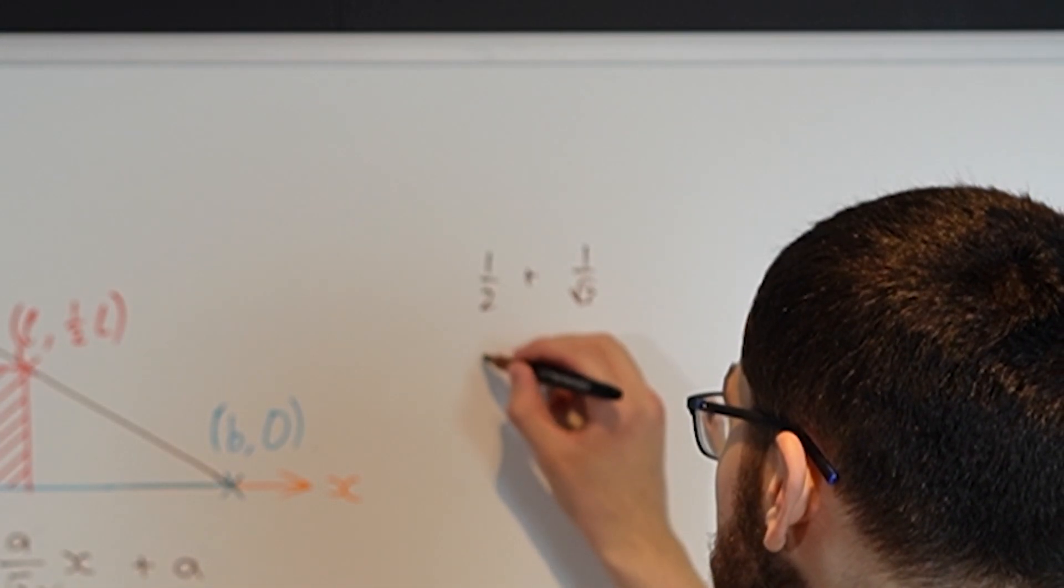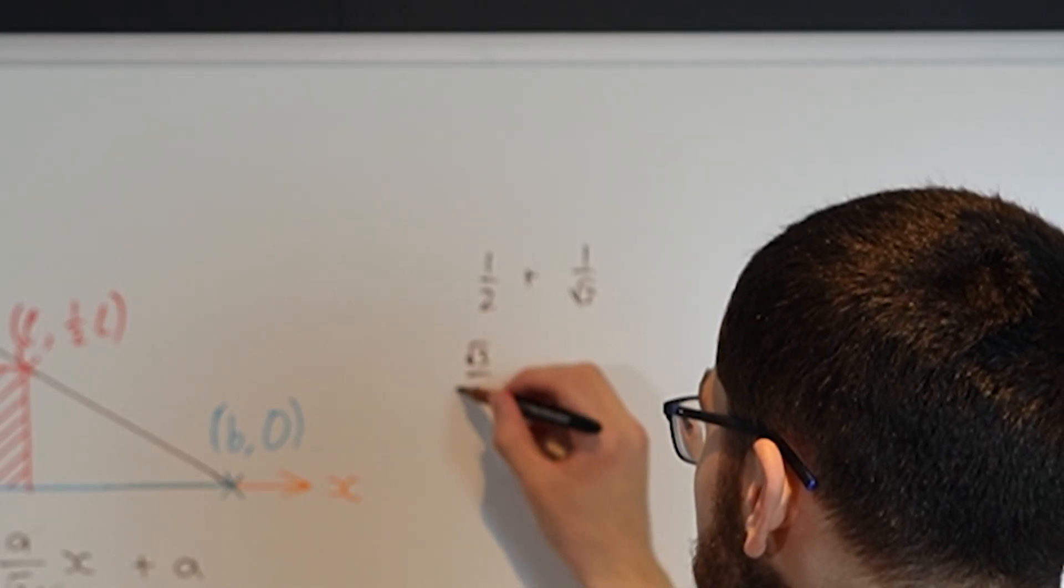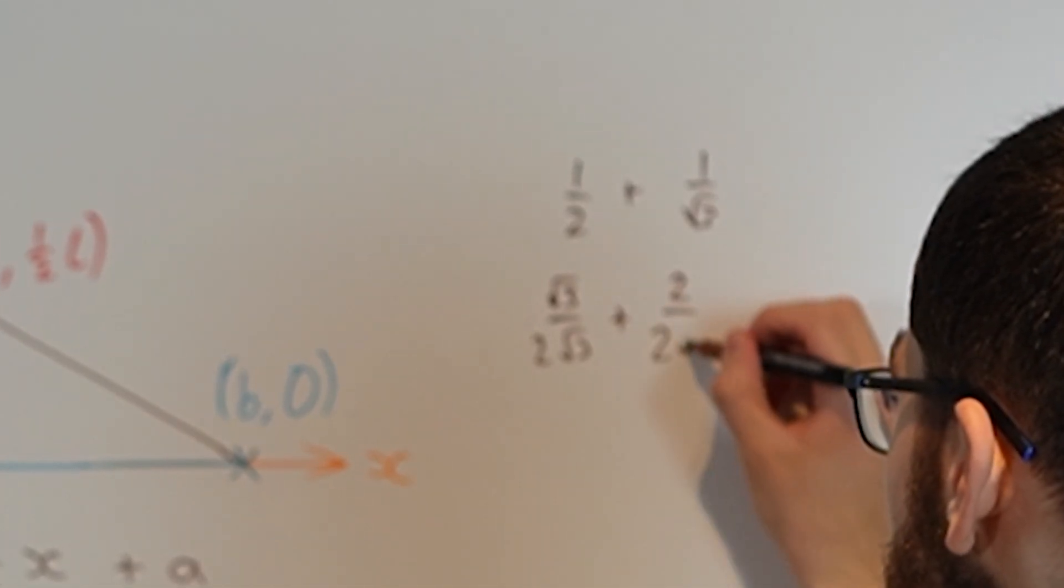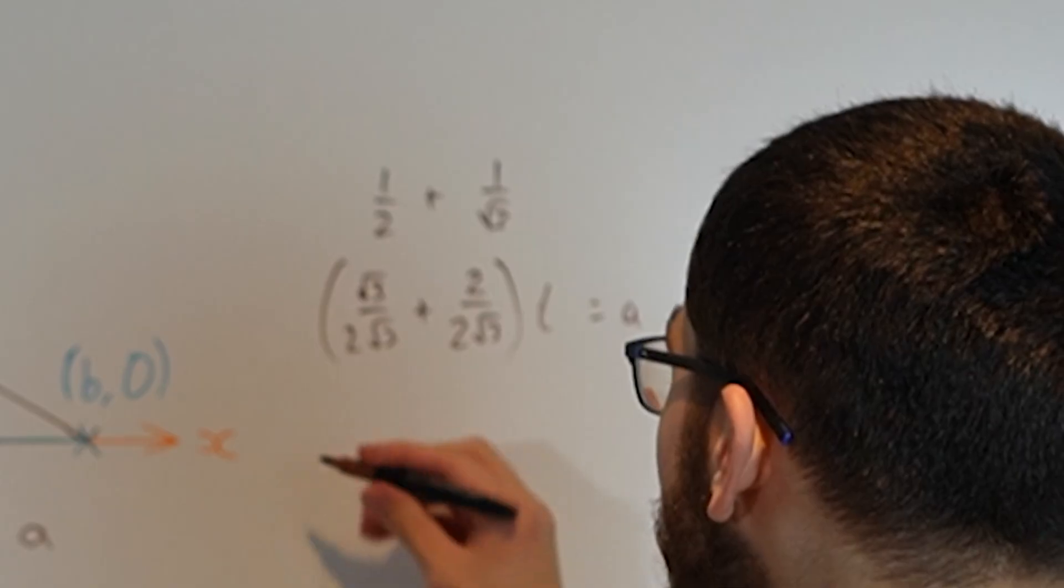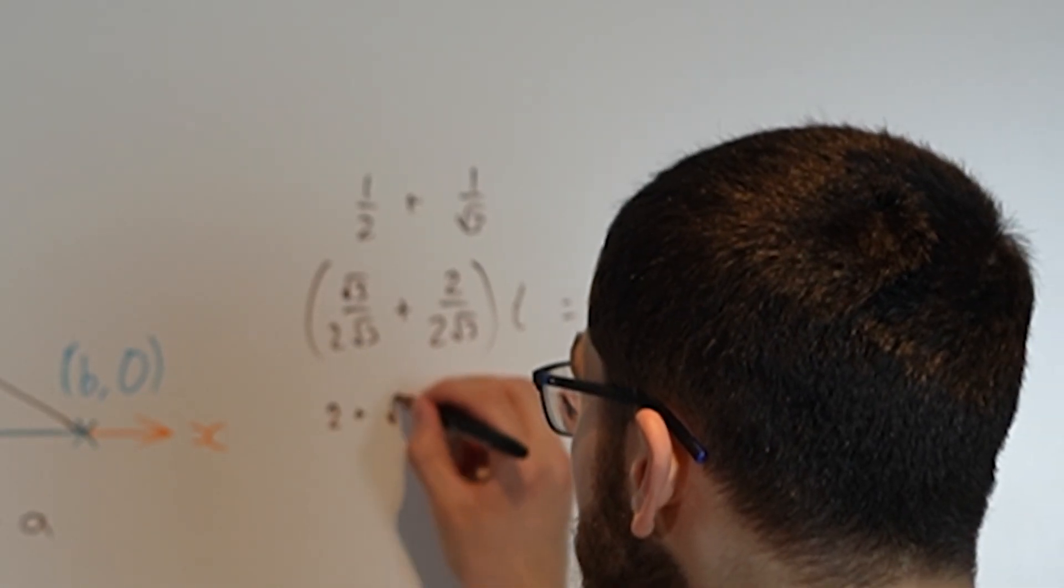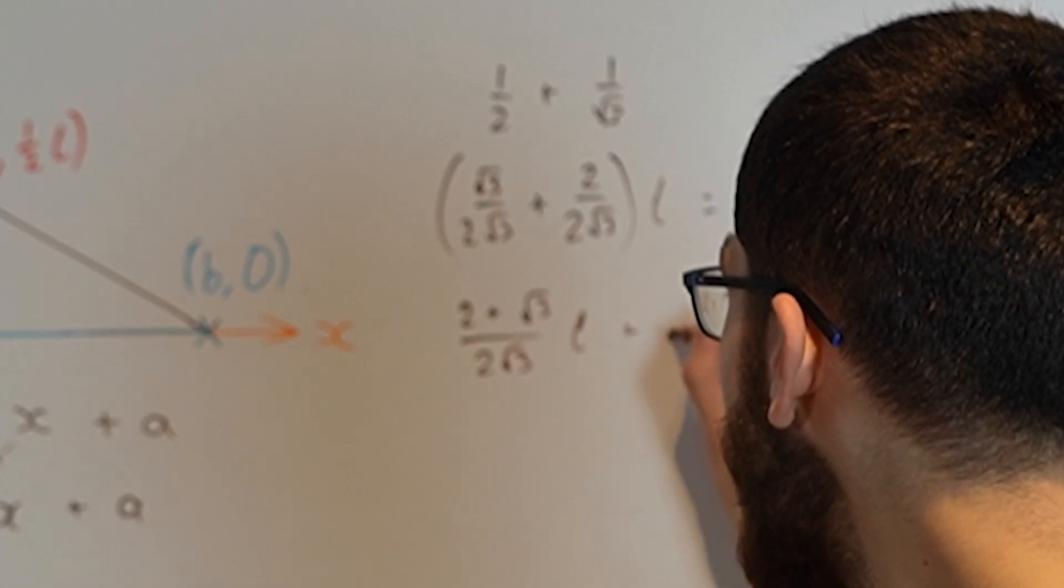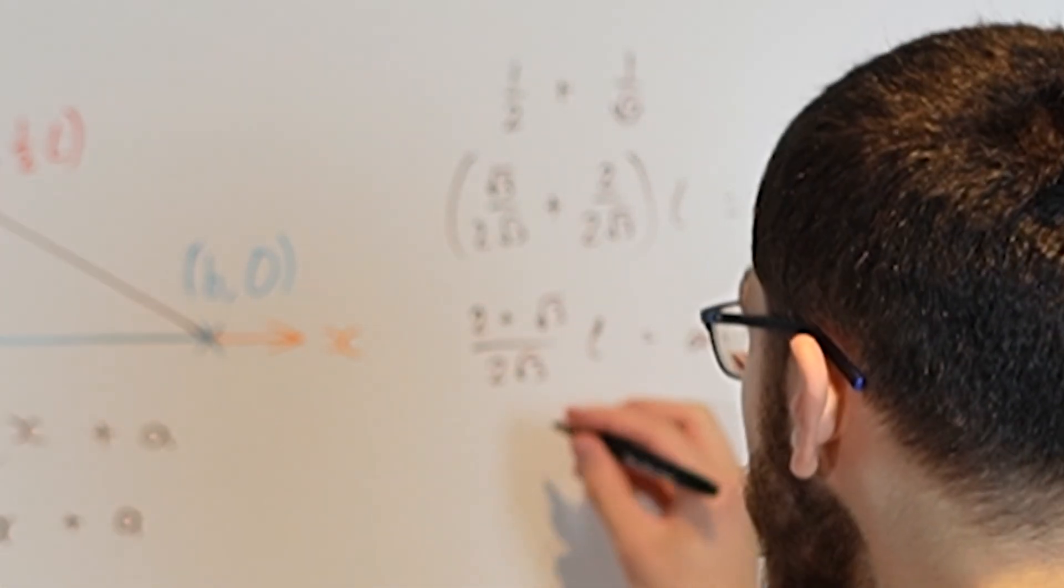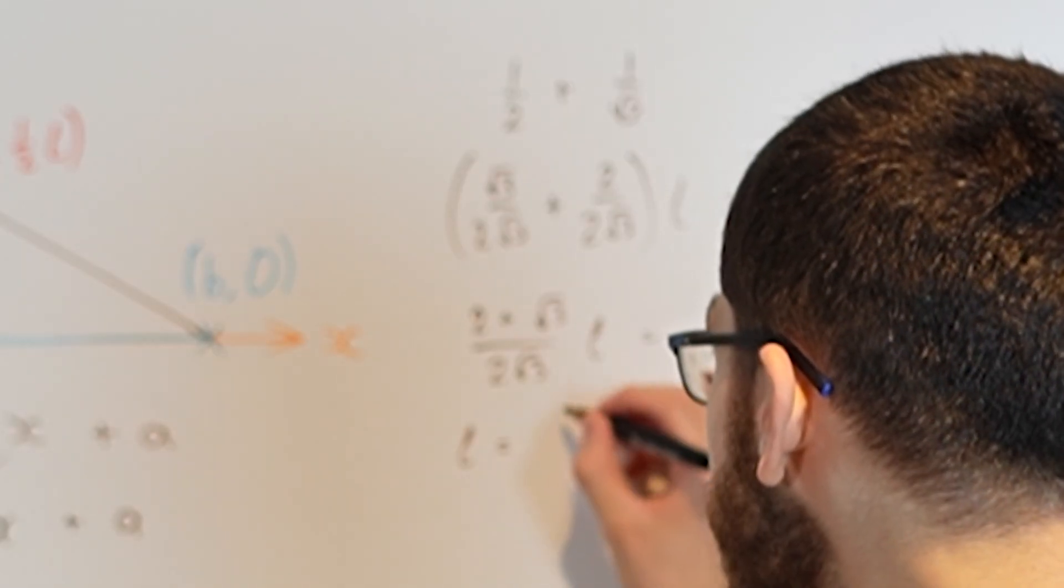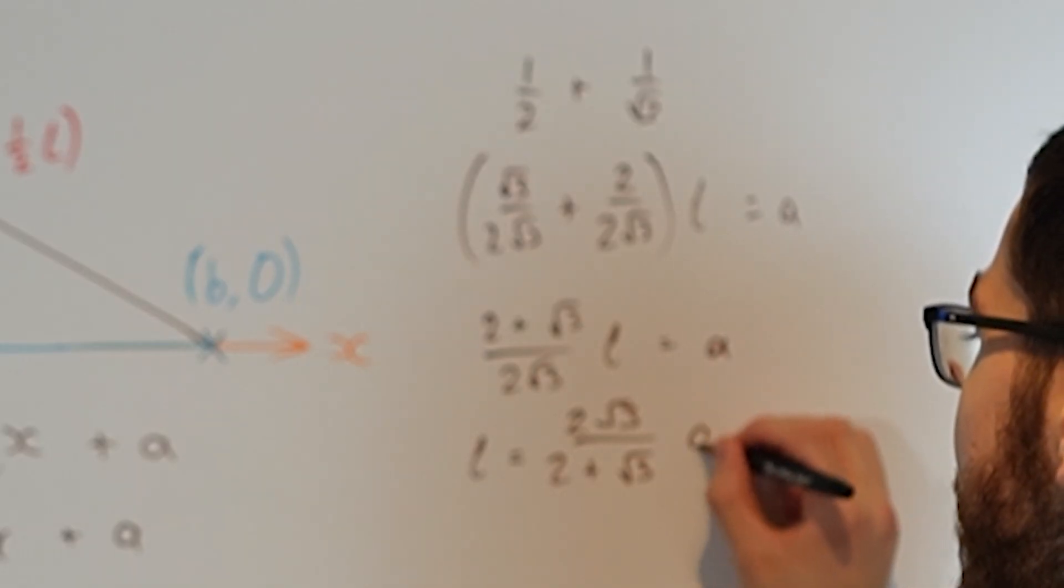We're first going to add together these two numbers. So a half add 1 over root 3. You make the denominators the same. You've got root 3 over 2 root 3 plus 2 over 2 root 3. Now this makes 2 plus root 3 over 2 root 3 L equals A. Now we flip it round. So you get L equals 2 root 3 over 2 plus root 3 times A.